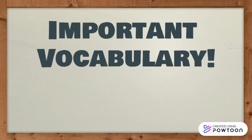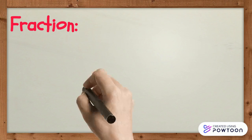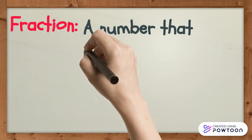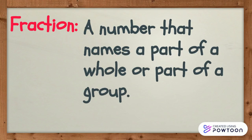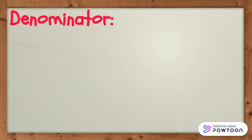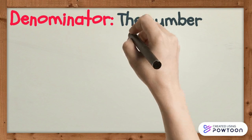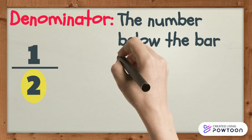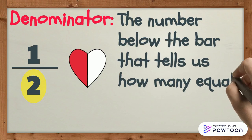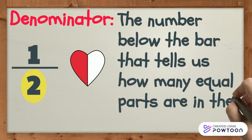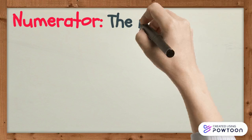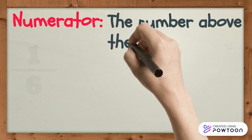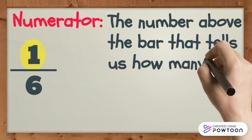Before we begin, let's review some important vocabulary. A fraction is a number that names a part of a whole or a part of a group. The denominator is the number below the bar that tells us how many equal parts are in the whole or the group. The numerator is the number above the bar that tells us how many equal parts are being counted.